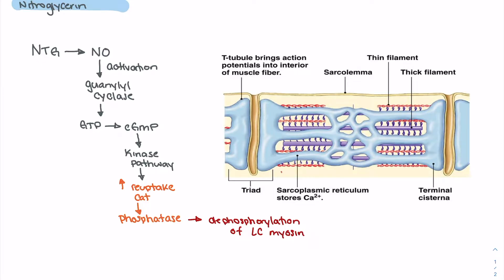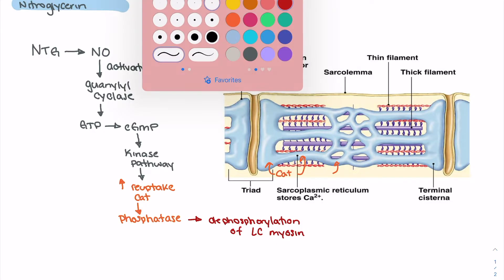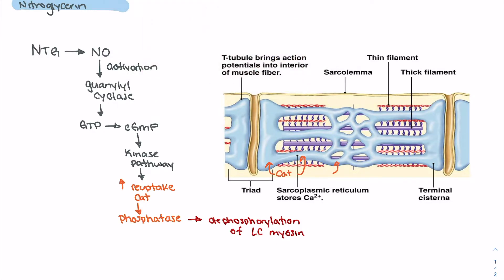We see reuptake of calcium in the sarcoplasmic reticulum, increasing calcium concentrations there, and dephosphorylation of our light chain myosin, which impairs the ability of contraction. The end effect of this is vascular relaxation.